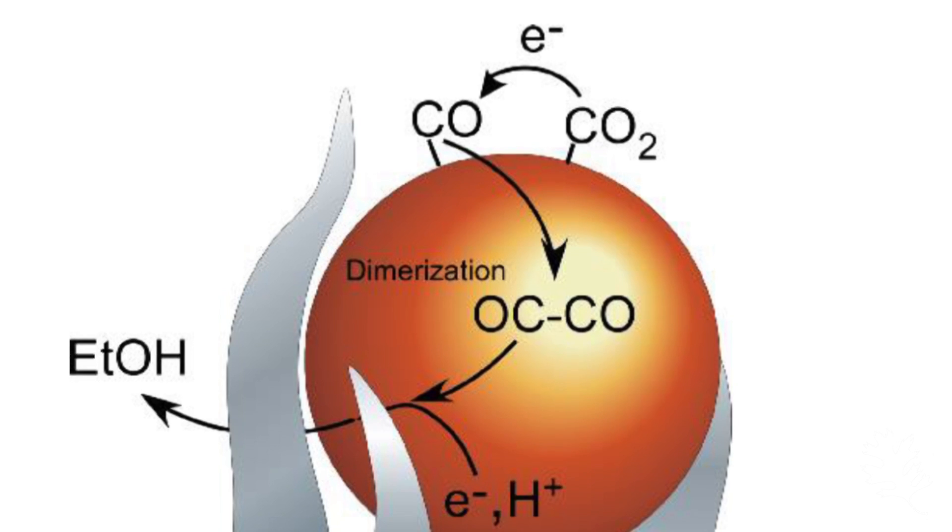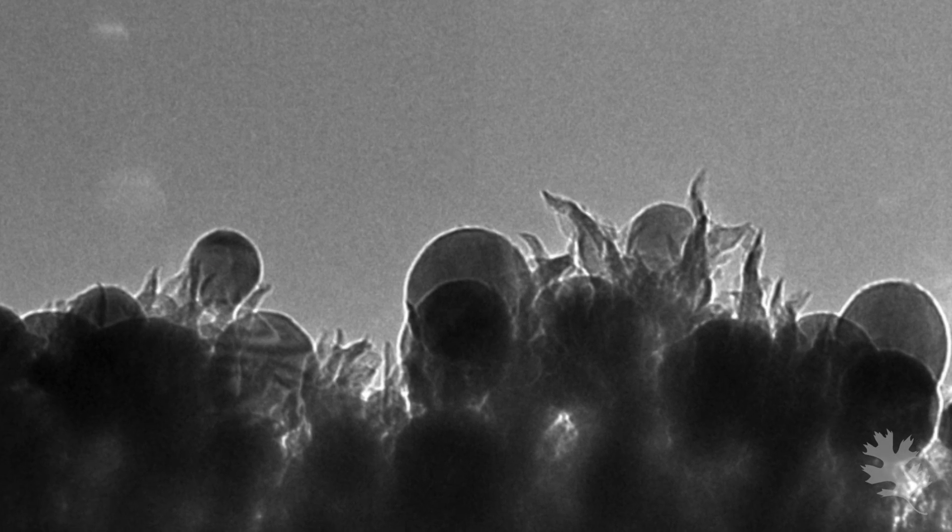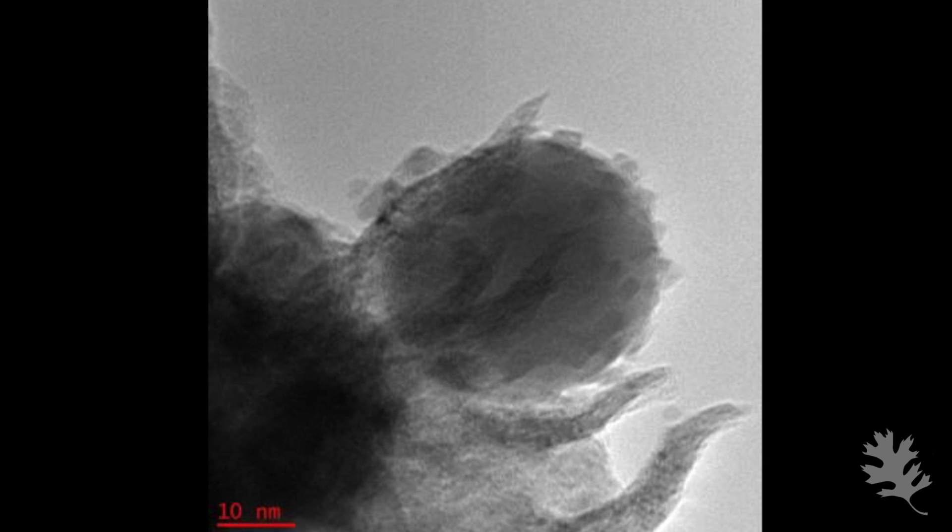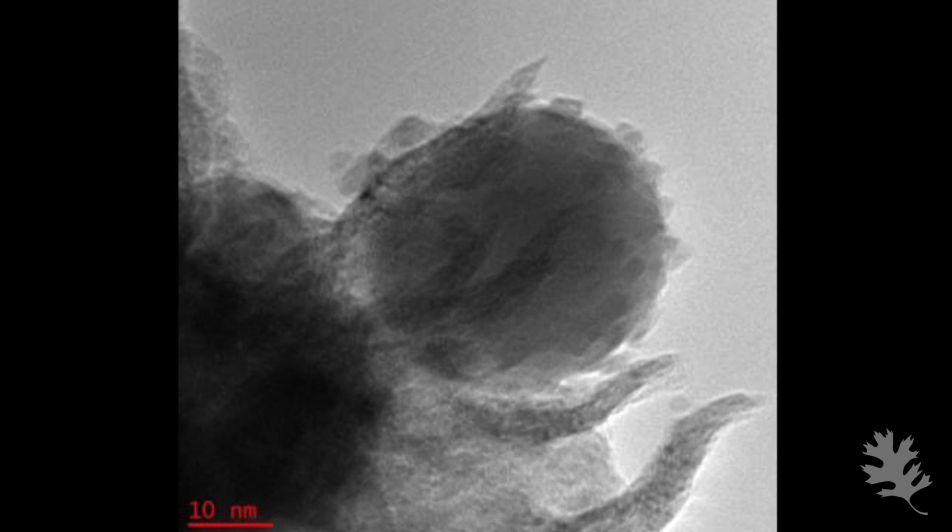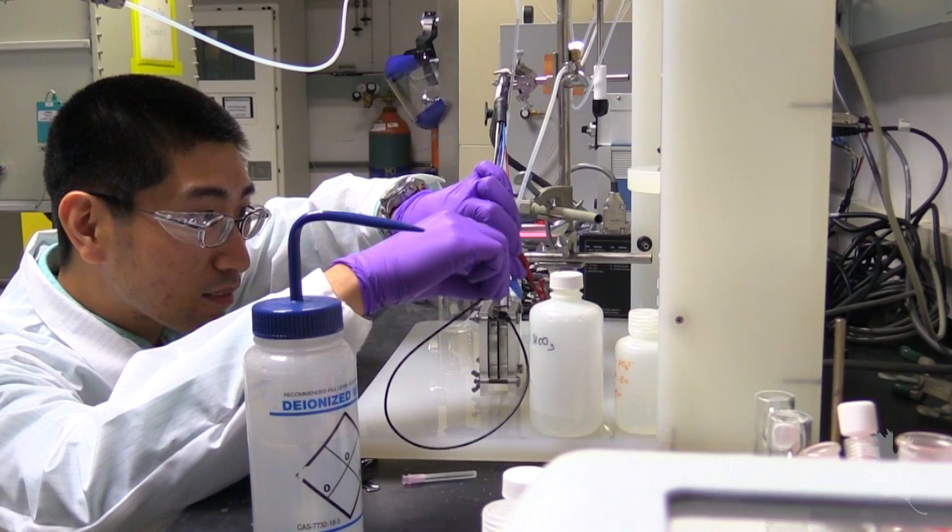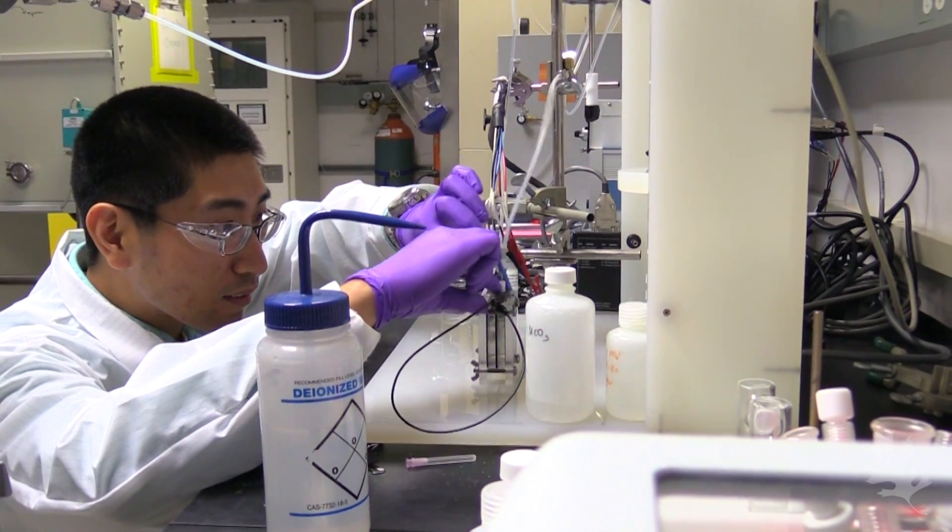So these little spikes are actually like tiny lightning rods, and they actually taper down to a tip that's just a few atoms thick, and what that does is it concentrates the electric field right there at the tip and creates a very high electric field that you wouldn't get on a normal flat catalyst.